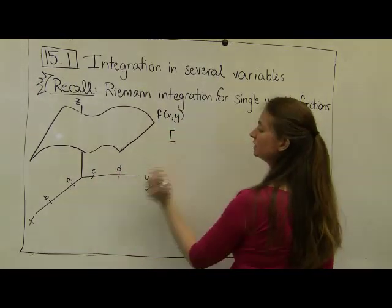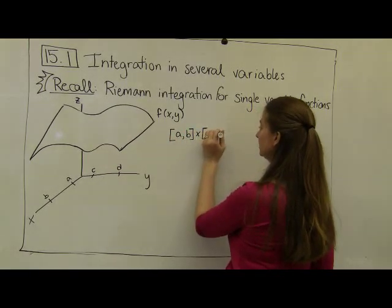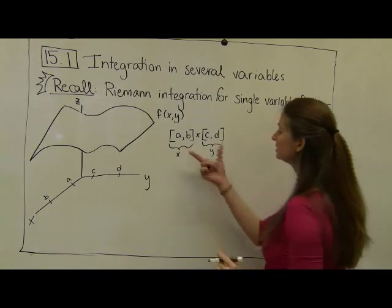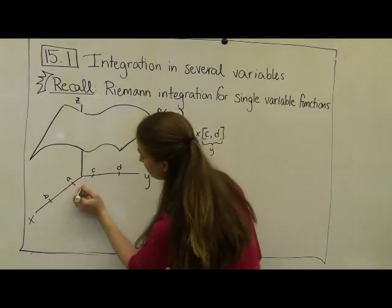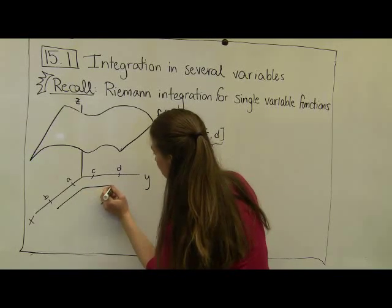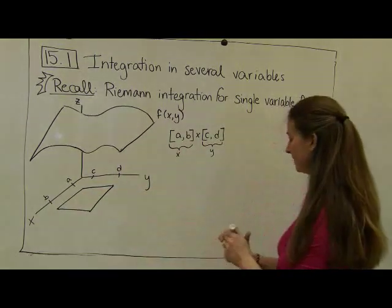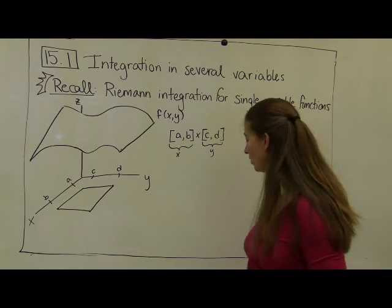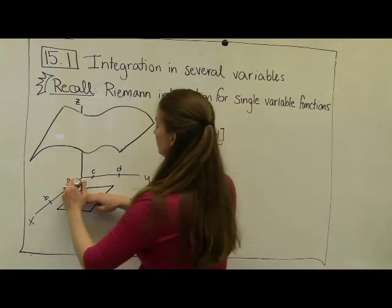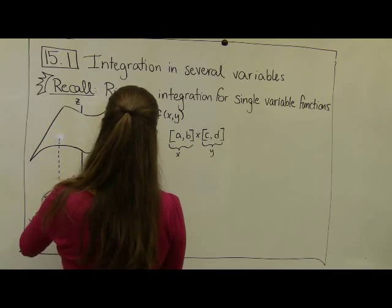My region in this case — the notation for regions — is going to be the interval [a, b] crossed with the interval [c, d], where by convention we always do the x coordinate first and the y coordinate second. This rectangular region looks like a box where my x values go from a to b and my y values go from c to d. That's my region of integration. And really what I'm trying to compute is the volume of the region — a box where the corners are up here on this wavy sheet.